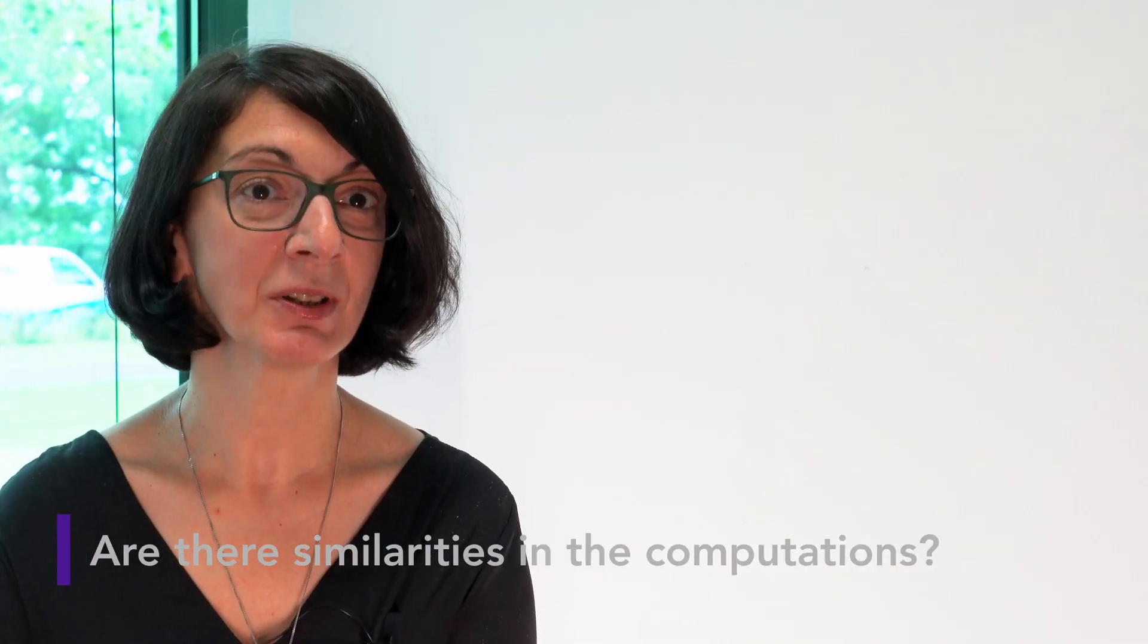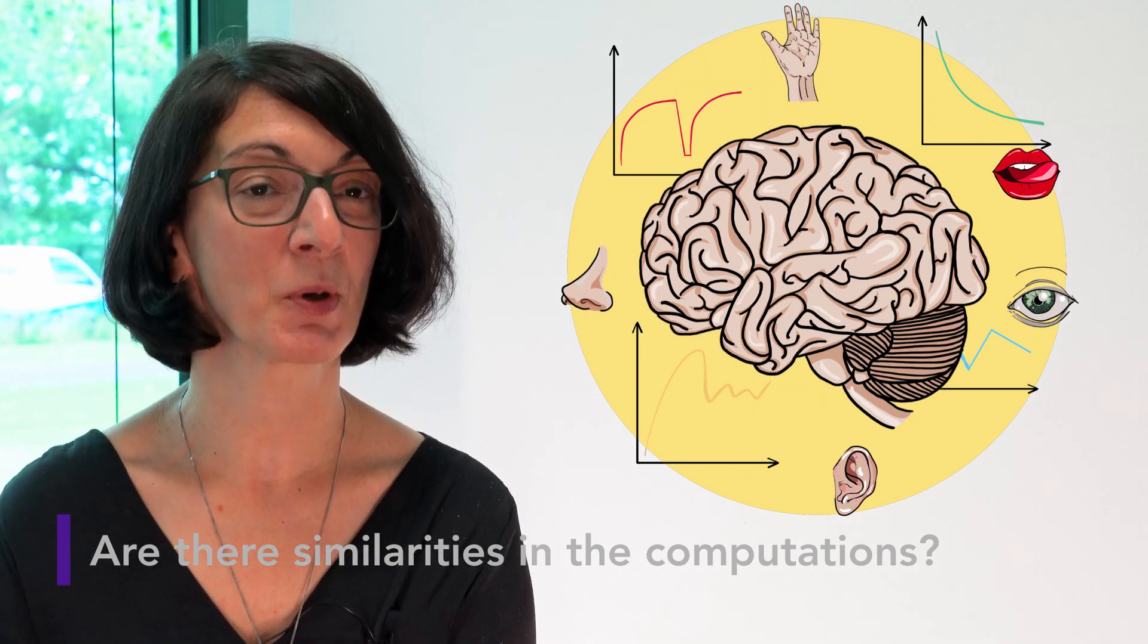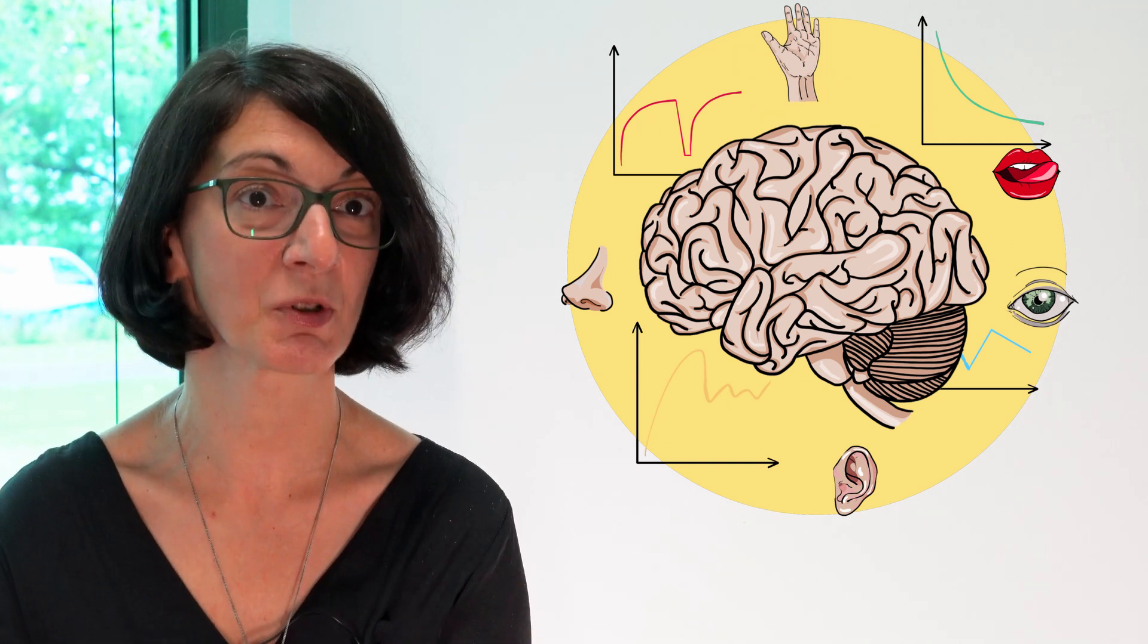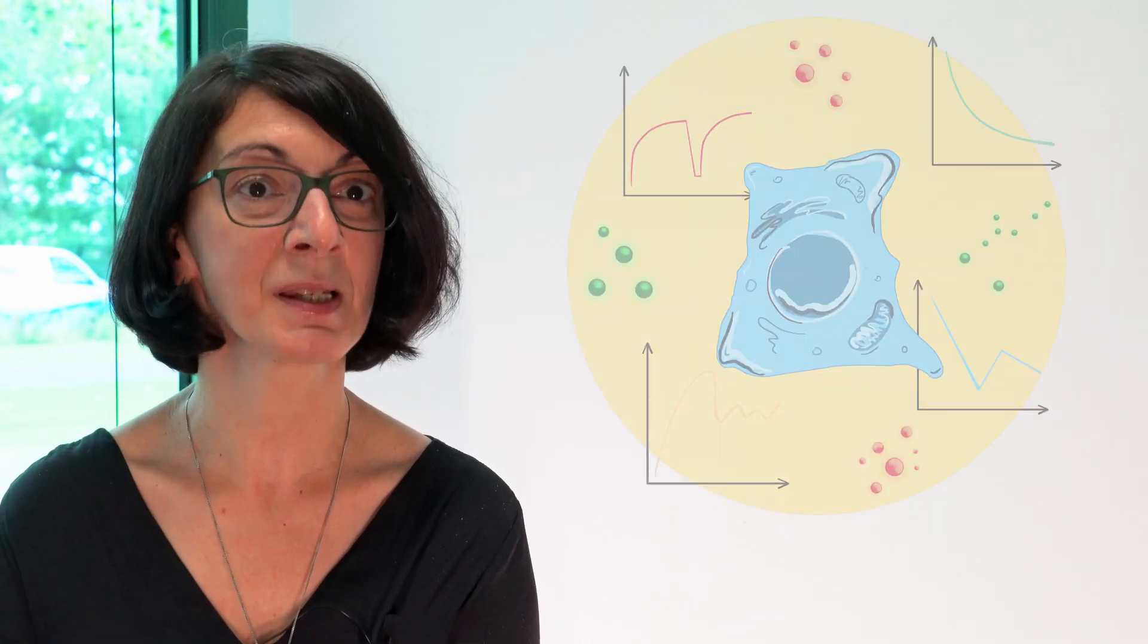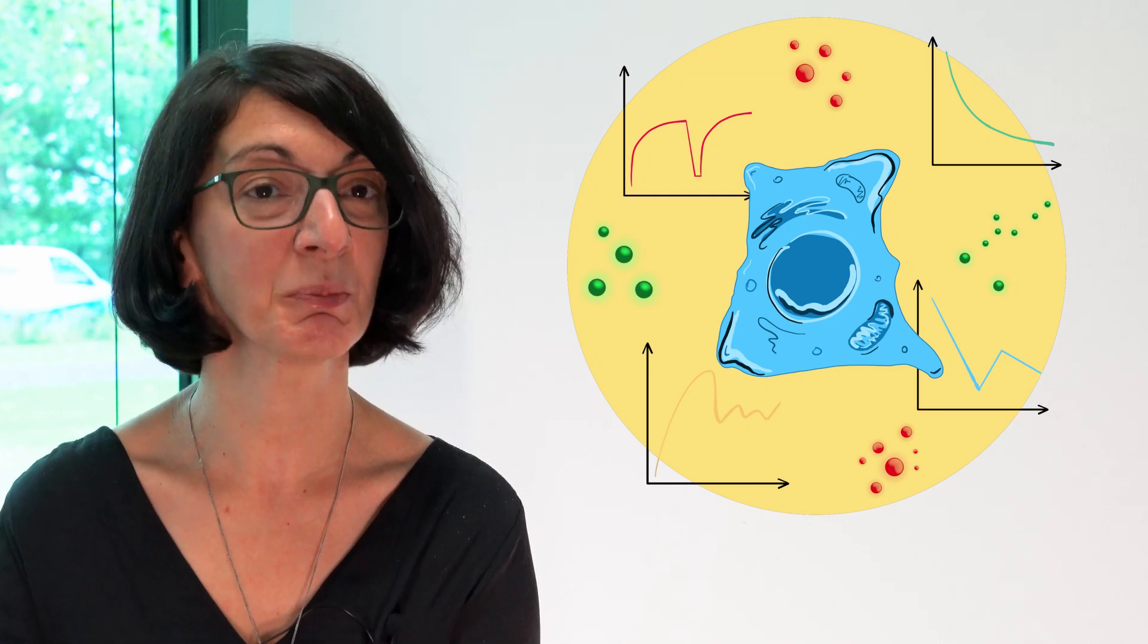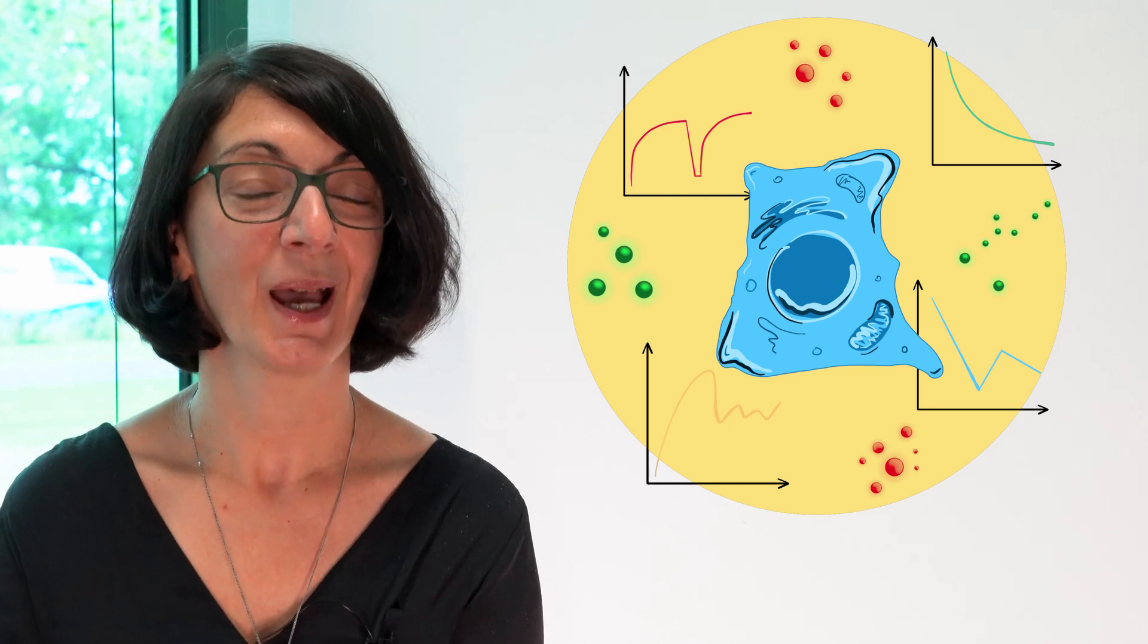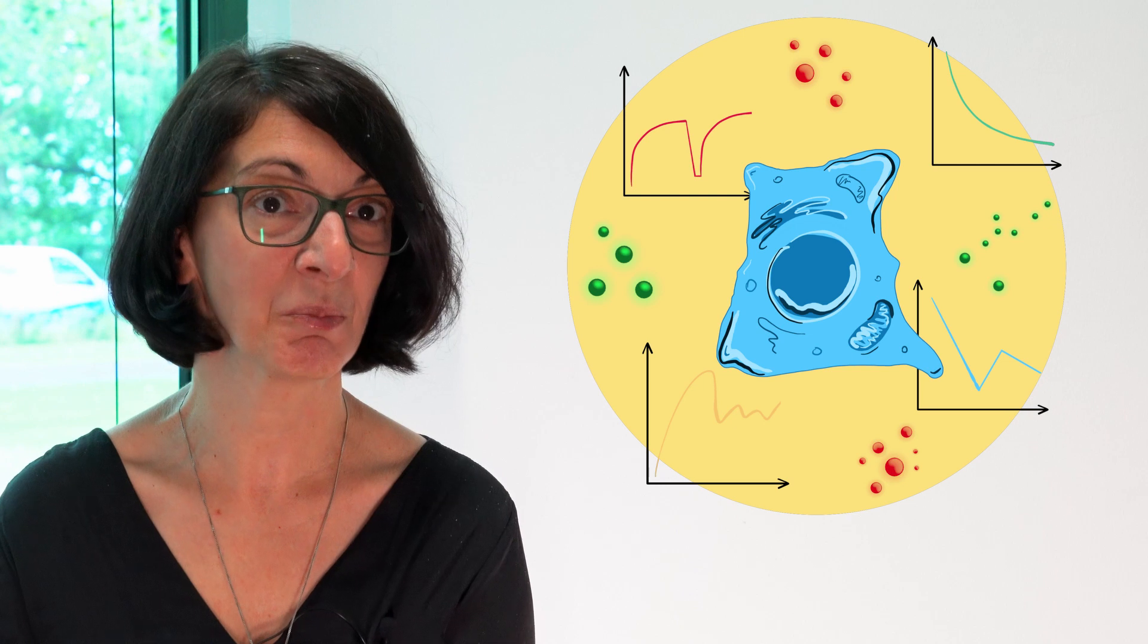Our brains or the neuronal networks, they continuously generalize the responses to the signals from the environment, but they are also capable of generating specific responses to the signal depending on the context. And the single cells in our bodies, they have the same capabilities of generalization, but also generating specific responses to different chemical signals. And it is important to understand how these very opposed features emerge on a level of a single cell that does not have a neuronal network to process this information.